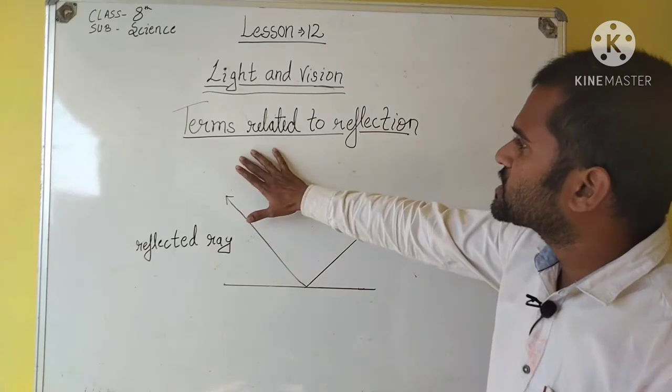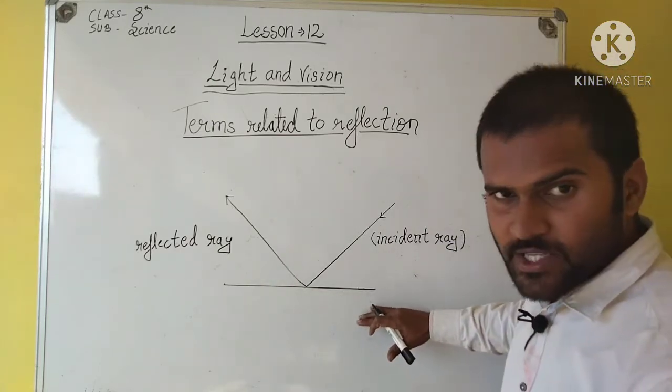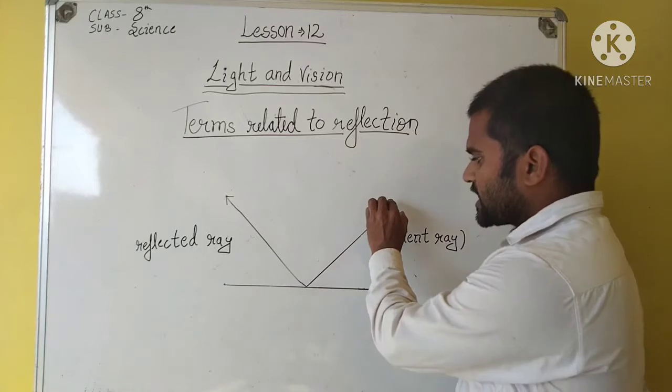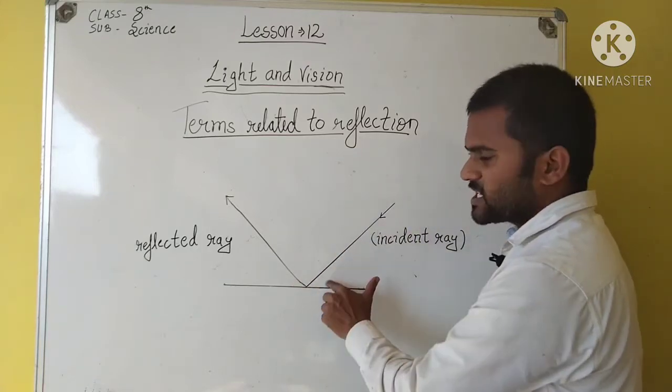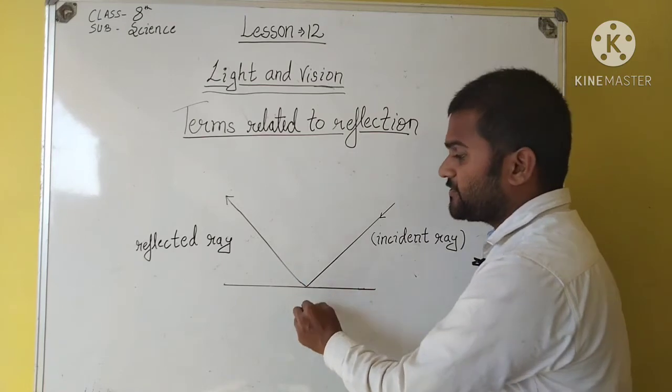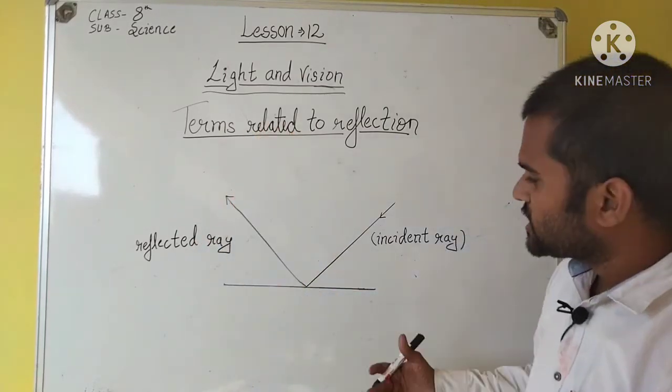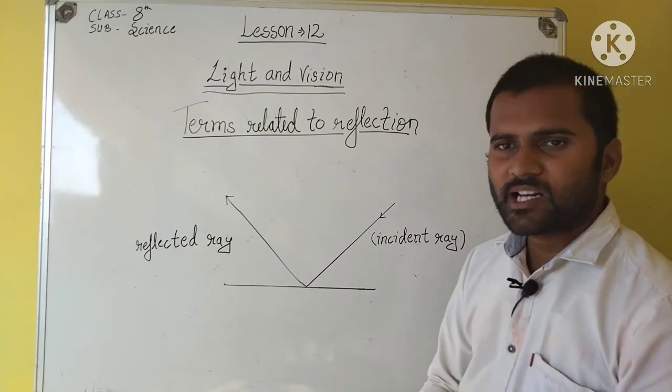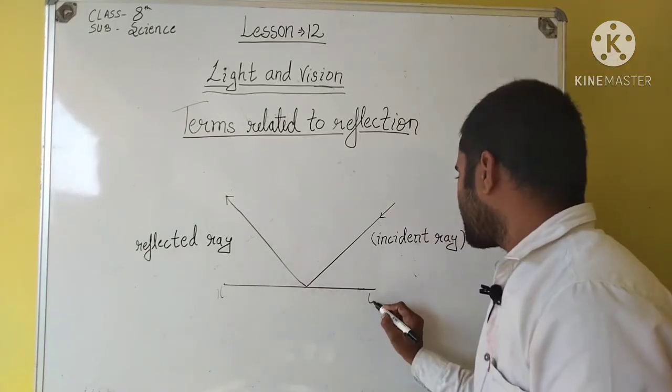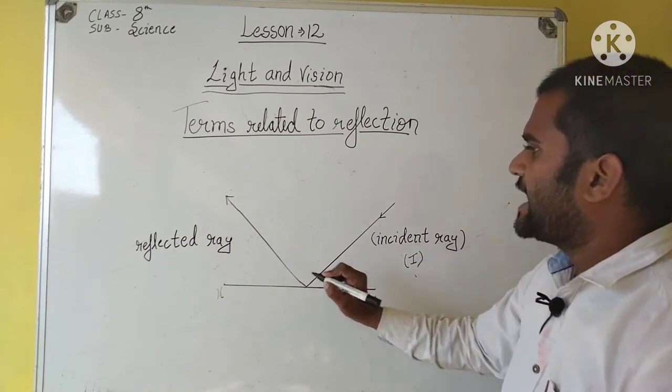There are some terms related to the reflections given at page number 124. You can see figure 12.3. This is a regular surface. You have regular surface. If you have a ray to reflect and the ray which is reflected by the surface, which is reflected, here we will say reflected ray. We will draw two axes X and Y. Incident ray can be denoted by I and reflected ray by R.